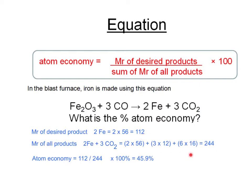Then we work out the MR of all the products: the two Fe's (112) added to the three carbon dioxides. The three CO₂'s have three lots of carbon (3×12) and six lots of oxygen (6×16), giving 132. So the total is 244. The atom economy is 112 over 244, expressed as a percentage, which comes out at 45.9%, showing that more than half of the reactants are wasted.